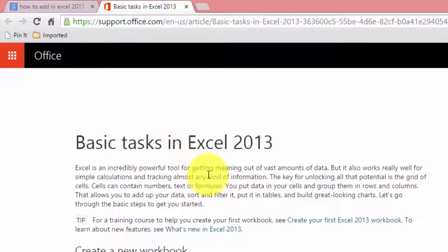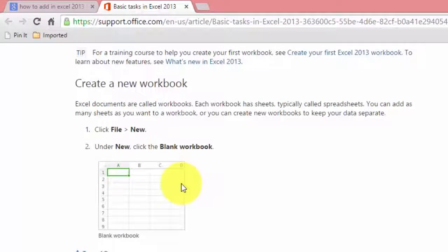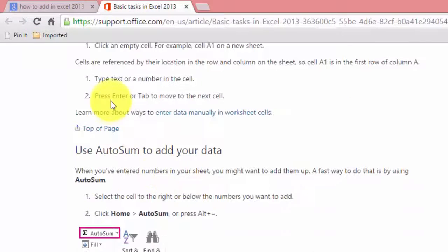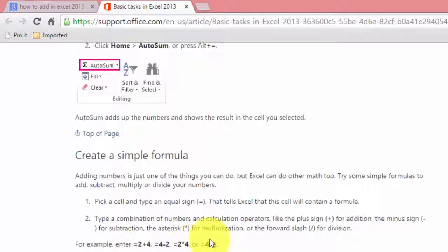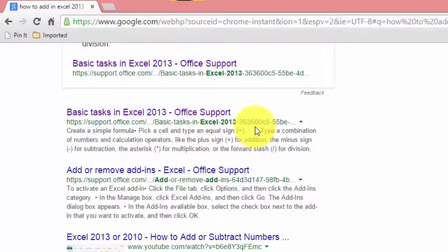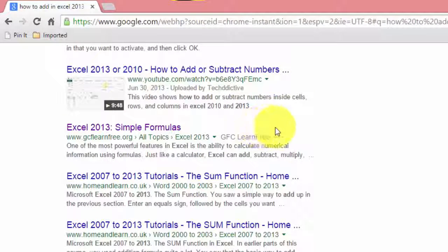It says basic tasks in Excel: create a new workbook, enter your data, auto sum, create a simple formula. For example, equals 2 plus 4, 4 minus 2. This is not very clear on how we can add, so let's click on this one.